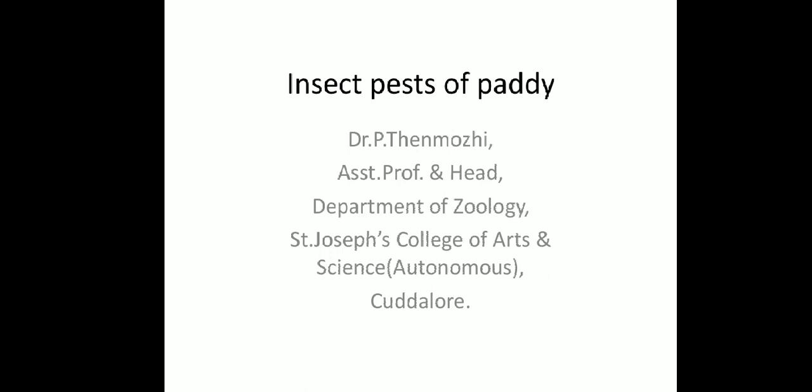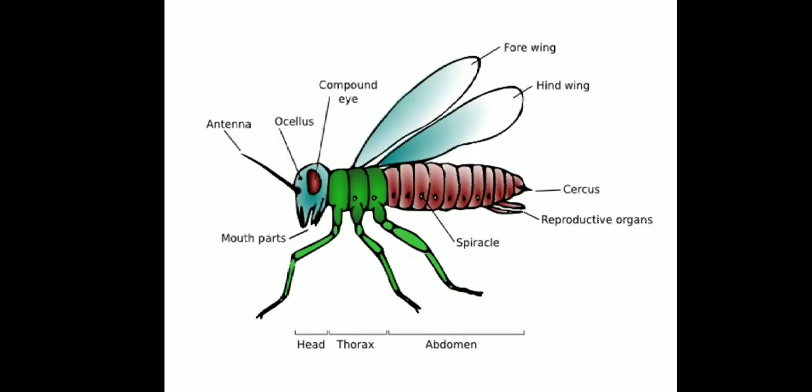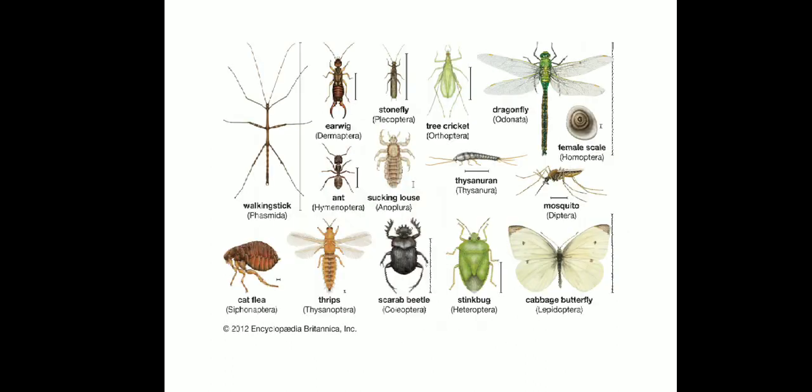Today our topic is Insect Pest of Paddy. The general structure of an insect consists of three prominent parts: head, thorax, and abdomen. These pictures show various types of insects which are causing serious damage to various crops.